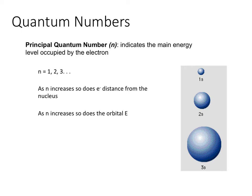The principal quantum number tells you the relative distance from the nucleus that the electron occupies. As shown in the diagram, the 1s orbital is the smallest, closest to the nucleus. The 2s orbital is larger, and the 3s is larger still. So N tells you both the distance from the nucleus and the relative energy of the electron.